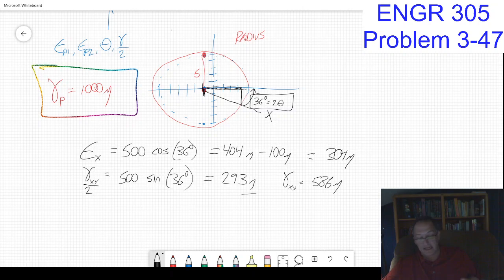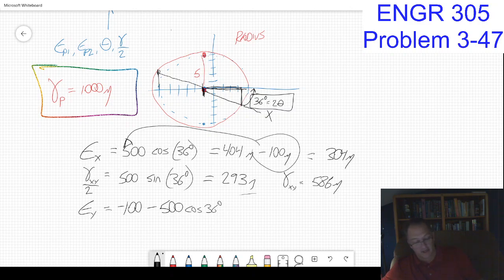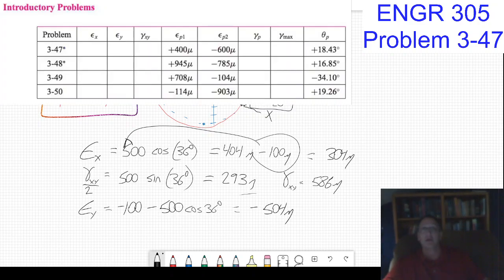The strain in the y direction is going to be equal to starting at minus 100 and then subtracting 500 cosine 36 degrees. That's 404 minus 100, so that's going to be minus 504 micro. Now I think I've finished up my table.